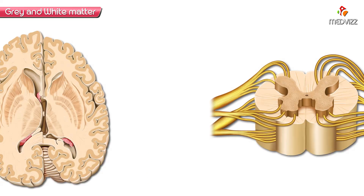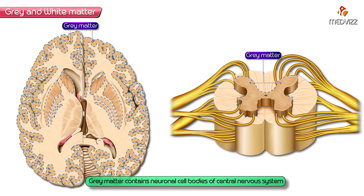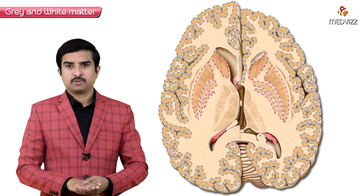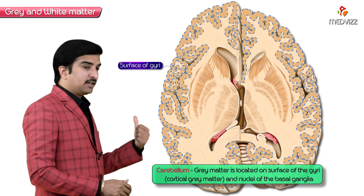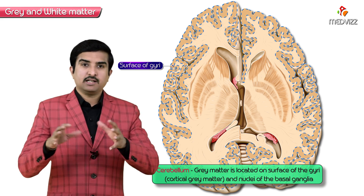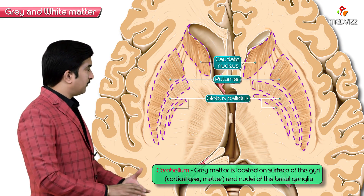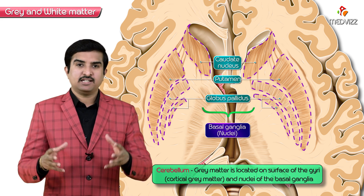We need to talk about the gray matter and white matter of the central nervous system. The gray matter is the substance of the brain and spinal cord that contains the neuronal cell bodies. Within the cerebrum, the two main locations of gray matter are on the surface of the gyri — that is, the cortical gray matter — and the nuclei embedded in the deeper white matter, like islands, called the basal ganglia.